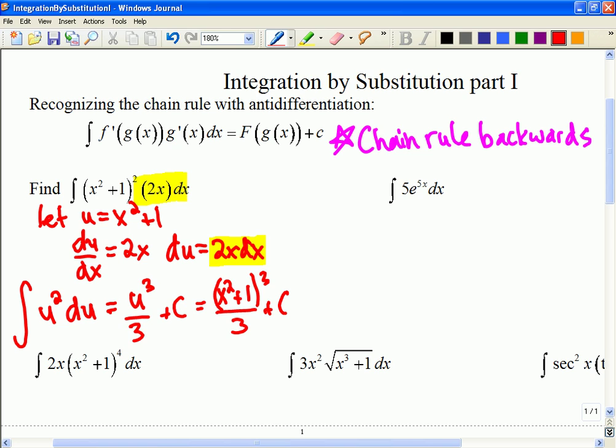But we were given x's to start. So we would like our final answer to have x's in it. So I would write this as x squared plus 1 cubed over 3 plus the constant. So in that sense, what I've been able to do is find that integral without having to go to too much trouble because I made a substitution. So can anybody guess why I chose to make the substitution for x squared plus 1?